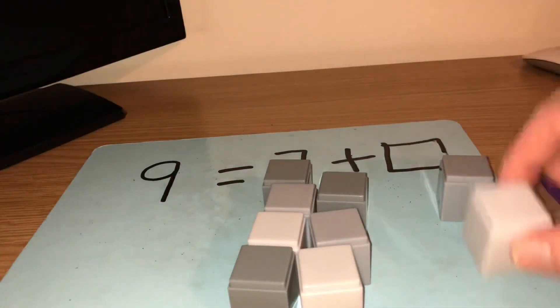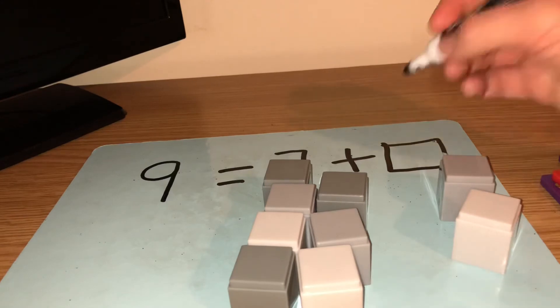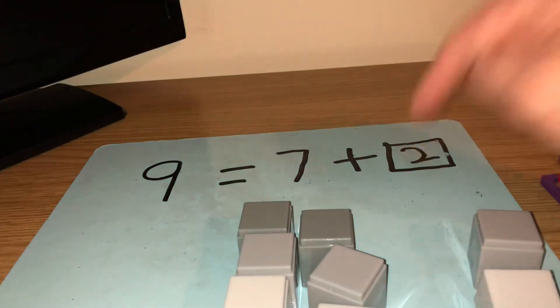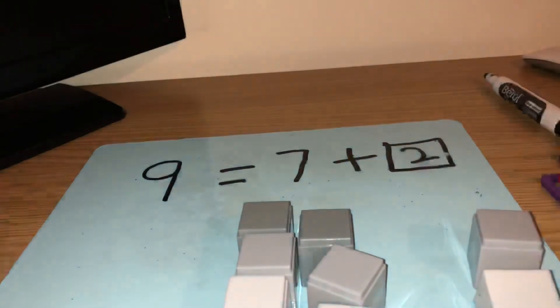Let's put all these blocks over here and find out. Ready? 1, 2. So the missing number must have been 2. We've got 7 and 2 is the same as 9.